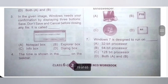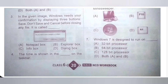Third one: in the given image, Windows needs your confirmation by displaying three buttons — Save, Don't Save, and Cancel — before closing any file. It is called: Option A: Notepad Box. Option B: Explorer Box. Option C: Info Box. Option D: Dialog Box. So it is called Dialog Box. Option D is the correct answer.